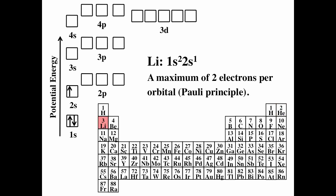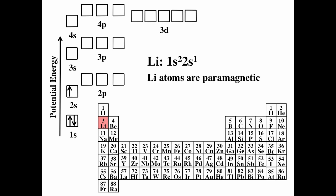For element three, lithium, we have three electrons — filling the lowest energy first, maximum two electrons per orbital, following Hund's rule. The electron configuration for lithium is 1s2, 2s1. Lithium atoms are paramagnetic because of the unpaired electron. For beryllium, four electrons, the electron configuration is 1s2, 2s2. Beryllium atoms are diamagnetic — all electrons are paired — and should be repulsed by a magnetic field.